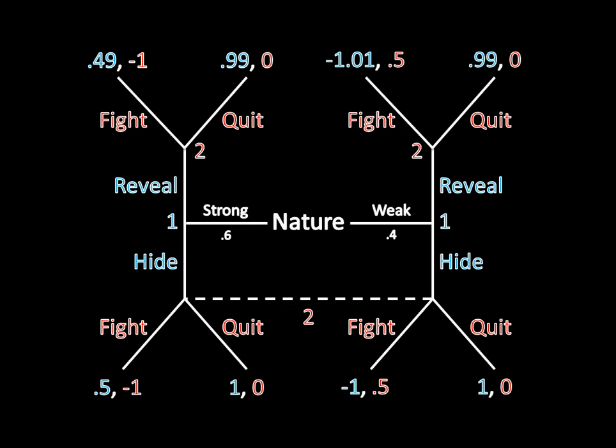Again, Player 2's incentives here are the same as before, where she would like to fight a weak type of Player 1, and she would like to quit against a strong type of Player 1. But unlike before, again, she does not directly observe whether Player 1 is strong or weak.